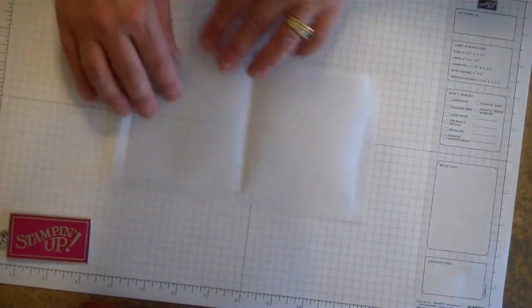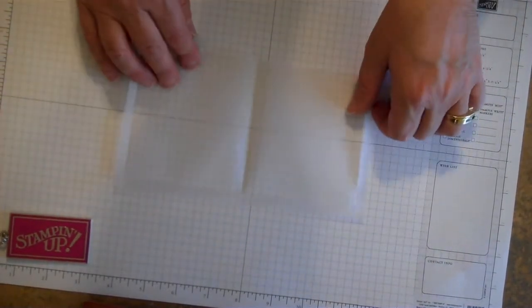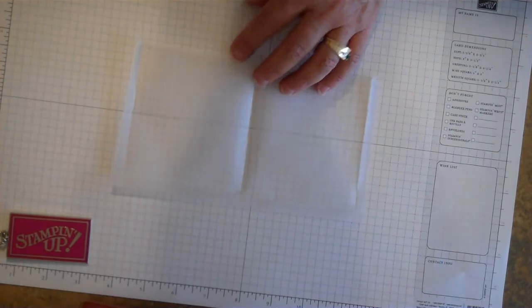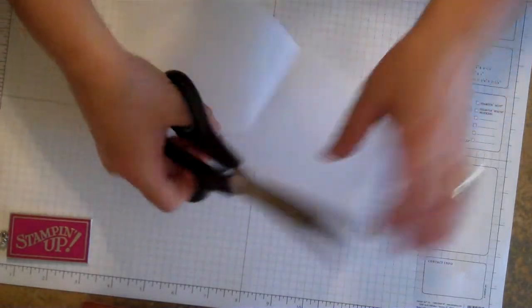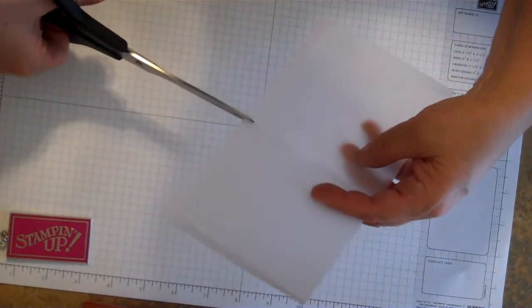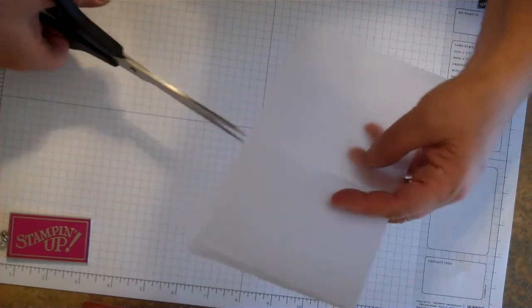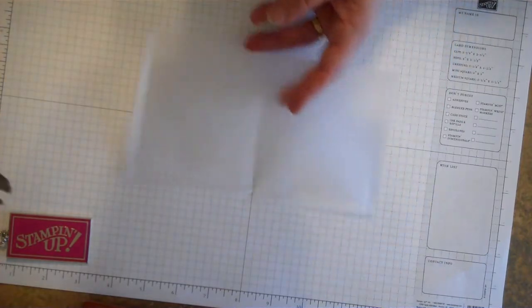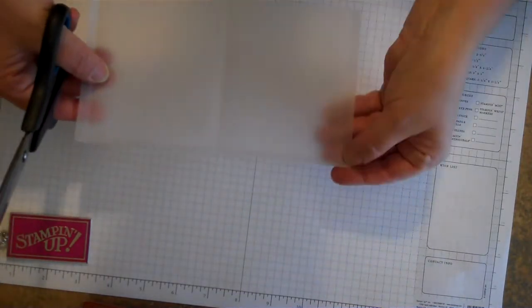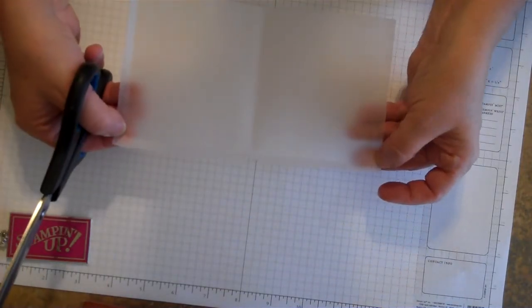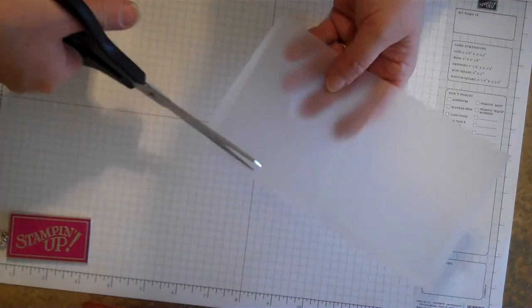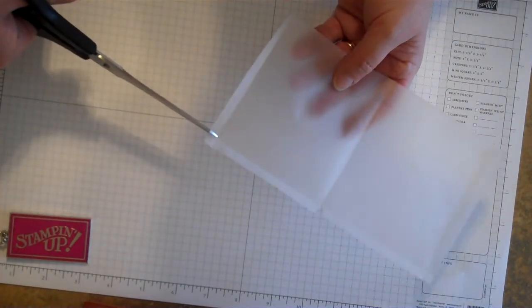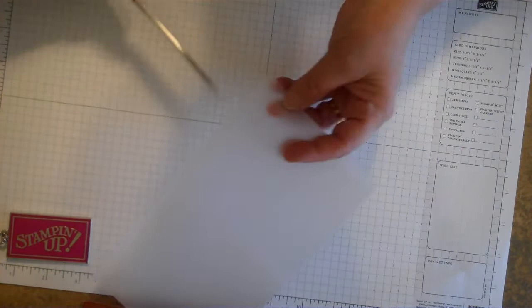Once you get this scored, you're going to take your scissors and make a little notch at the bottom of the center score line, that's the 4 inch line, and just cut that out. Then on the corners, both corners at the end where there's a little square, you're going to see where these two lines meet and it makes a little square. You're going to cut out that little square.